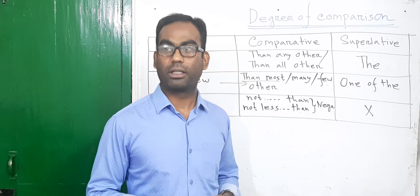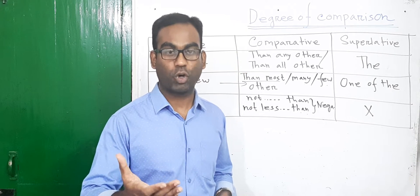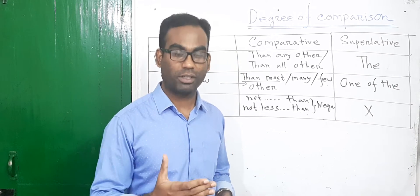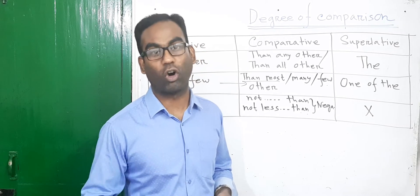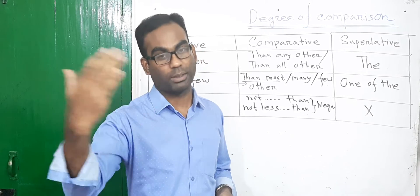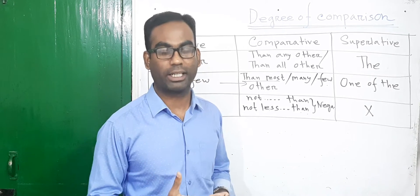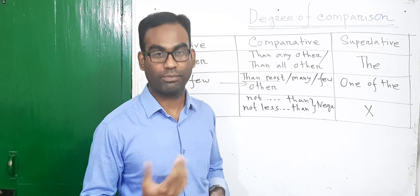Like, 'He is a tall boy' — here 'tall' comes before the noun, that is attributive use. But 'He is tall' — here the adjective comes after the noun, that is why it is called predicative use.